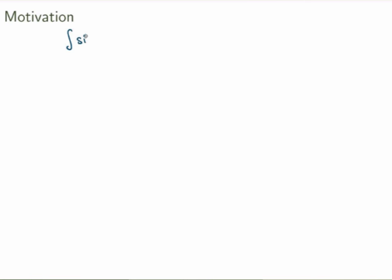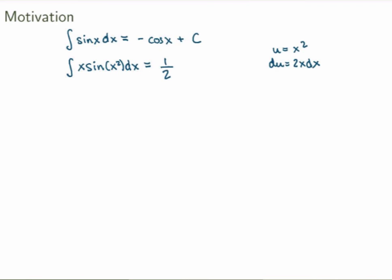Let me start by motivating what this is all about. If we start with a very simple integral of sine of x dx, I'm sure you all know right away what the answer is — this is just minus cos of x plus a constant of integration. For something slightly more complicated, the integral of x sine of x squared dx can be evaluated using substitution: set u equals x squared, du equals x dx, and the integral becomes one half integral of sine of u du, which gives minus one half cos of x squared plus a constant of integration.